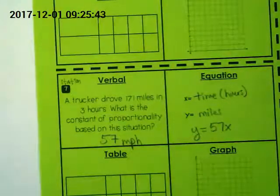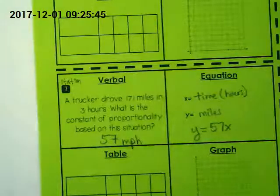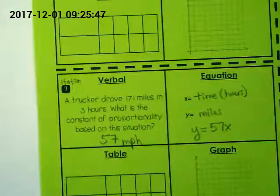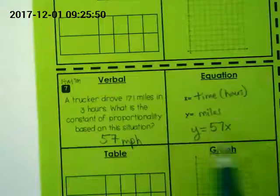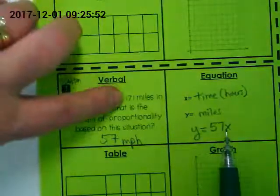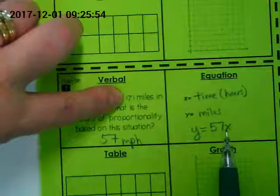If he drives one hour, we're going to do 57 times 1, and we're going to get 57. As we know, if he drives 3, it's going to be 57 times 3, and we're going to get back to that 171. Right?